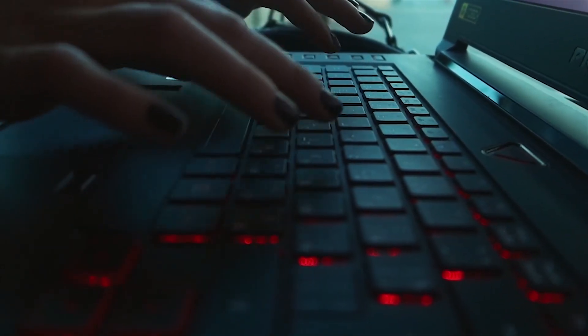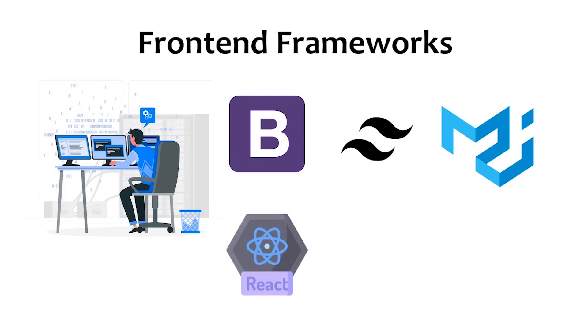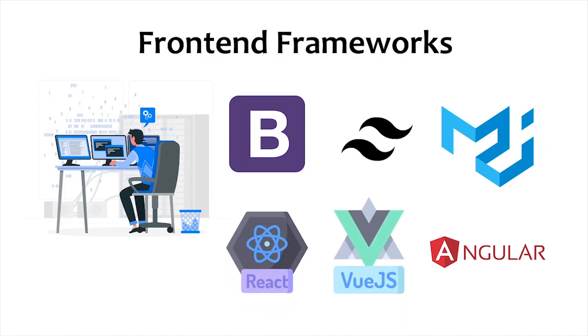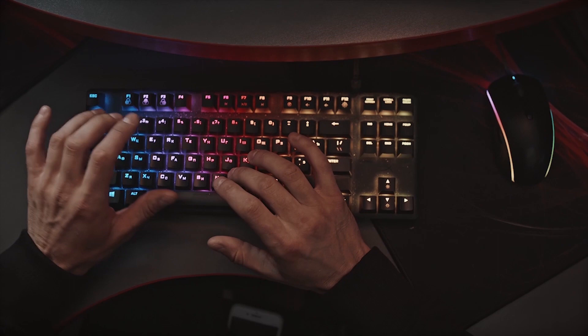And once you complete the frontend and the backend part, then you have to learn some frontend frameworks. Frameworks reduce the developer's effort and time because some structures and designs are predefined in them. For example, if you don't want to write your custom CSS code, then you have to learn Bootstrap, Tailwind CSS, Material UI, etc. — these are CSS frameworks. And once you complete the frontend basics, then you have to learn some advanced frontend frameworks like React.js, Vue.js, and Angular.